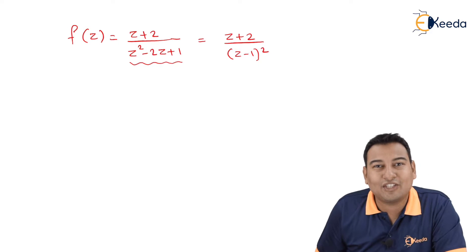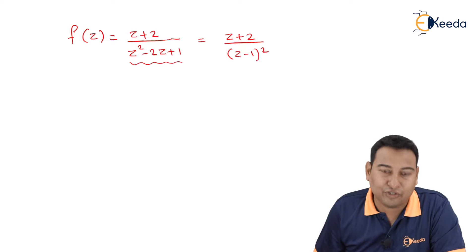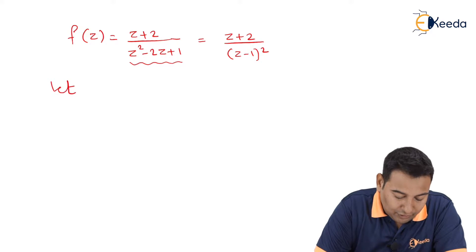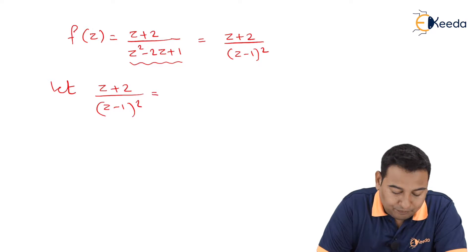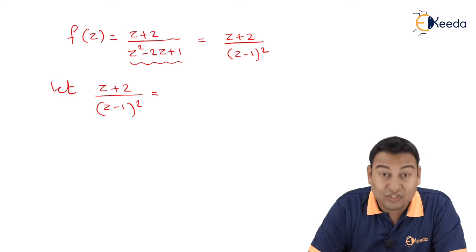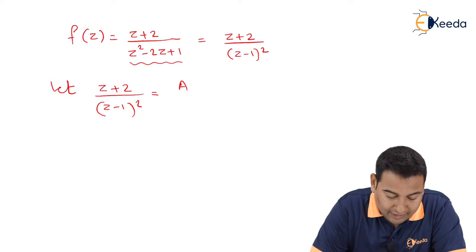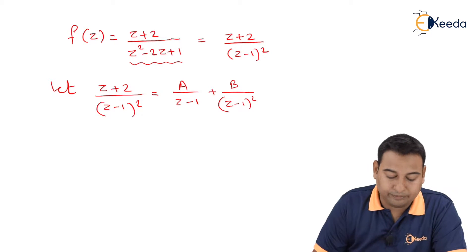The next step is fixed — first step is partial fraction. So let's start with partial fractions. (z + 2) / (z - 1)² — since the denominator is squared, it will be written as A/(z-1) plus B/(z-1)². This is how a partial fraction is written.